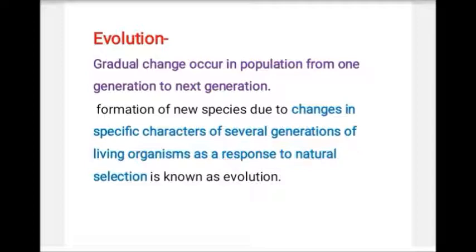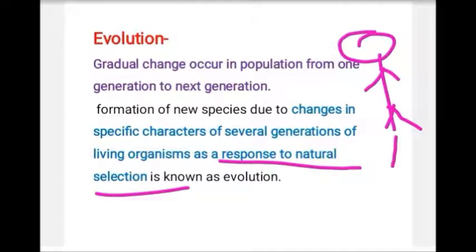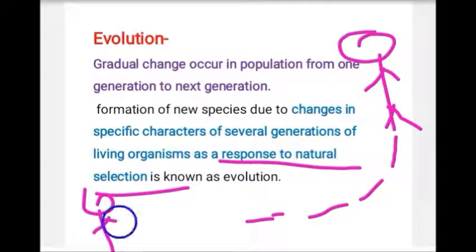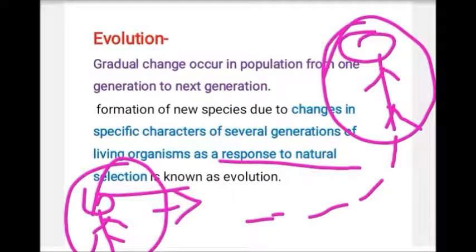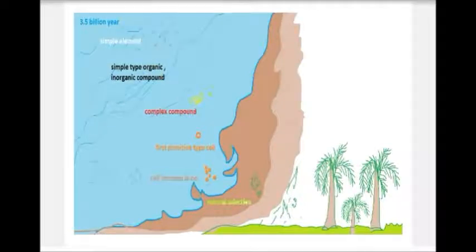For the survival of individuals in the environment, new changes come in their characters. Suppose there is one individual — after many generations, several generations later, a new individual is formed whose characters have changed as a response to natural selection. So when a new individual forms from one individual after several generations with changed characters, we say evolution has occurred. To study what type of evolution this is, and when life first appeared on Earth, we need to study evolution.